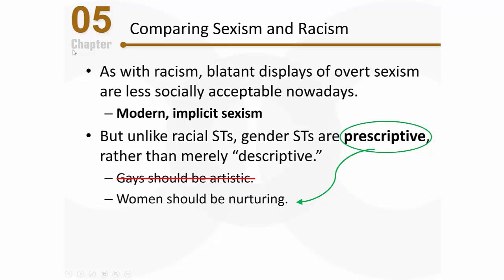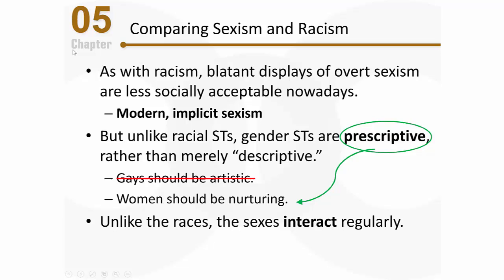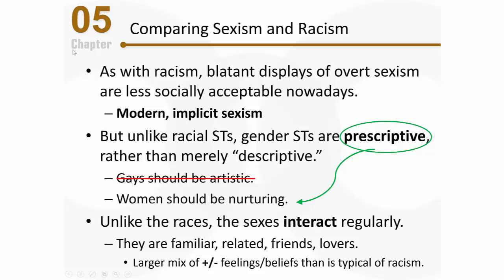That's one interesting difference. Unlike the races, the sexes actually interact quite regularly — we're very familiar with each other, related in families, friends with one another, lovers, people in long-term and short-term sexual relationships. So the sexes interact on a much different level than the races interact in our society. As a result, there's a larger mix of positive and negative feelings and beliefs between the sexes than is typical of racism.